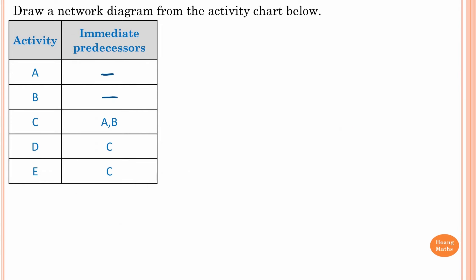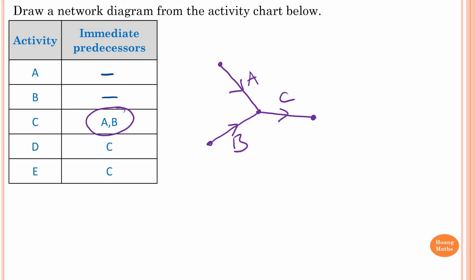For the next example, A and B have no immediate predecessor. A and B are immediate predecessors of C, so activity A and activity B join together. This is activity A and activity B. For activity C, A and B are immediate predecessors, so this is activity C. For activity D, C is an immediate predecessor, so D is here.